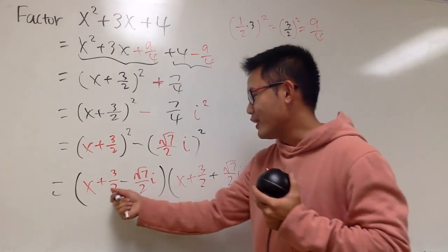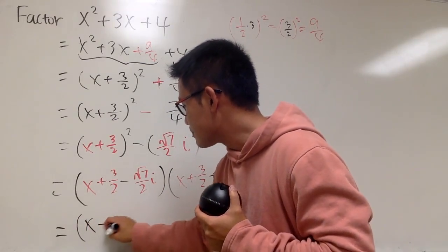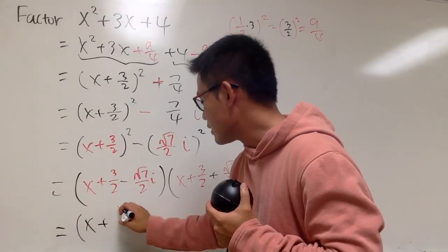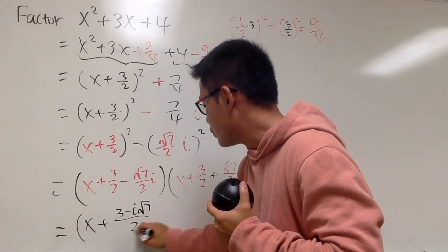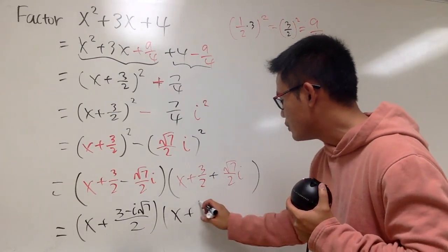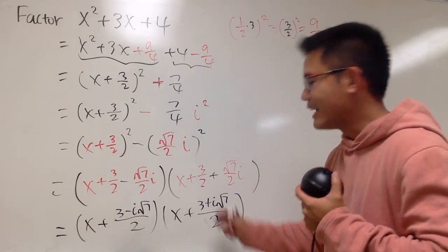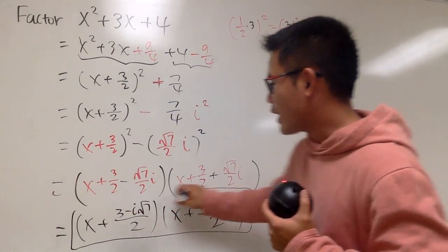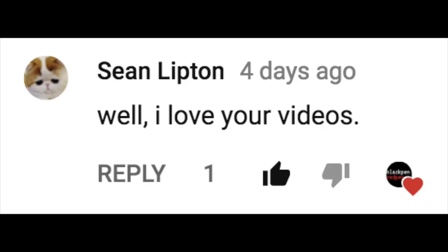You can say you're done, but usually, when you have common denominator, put it together. So finally, this is going to be x plus this minus that i, so let me just put it down as 3 minus i square root of 7 over 2 times this right here is x plus 3 plus this times i, which is 3 plus i square root of 7 over 2, like this. This is how you factor that quadratic expression that you asked. Hopefully, you like it. Yes. So good.